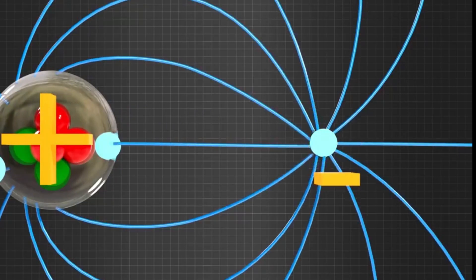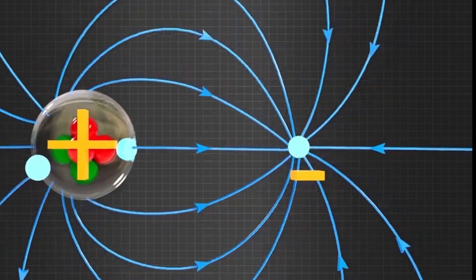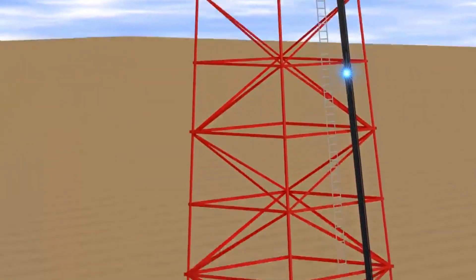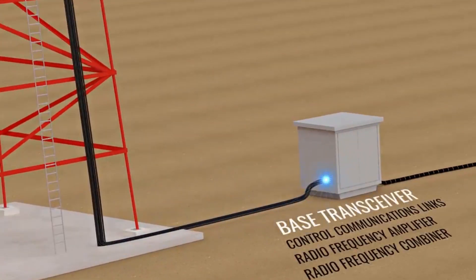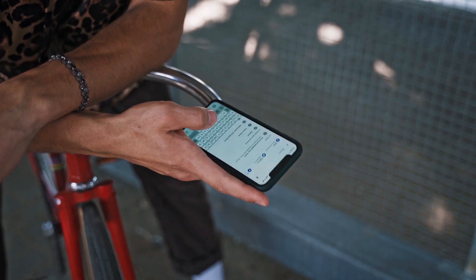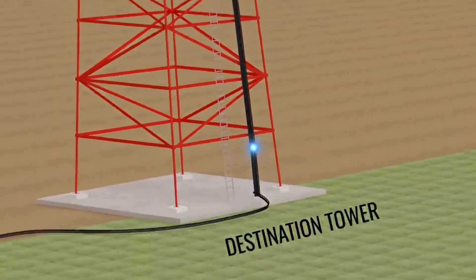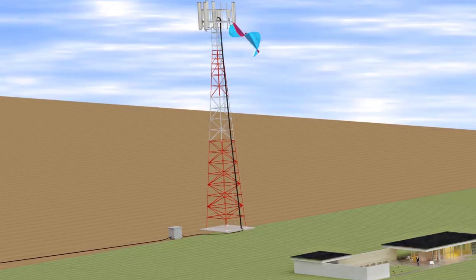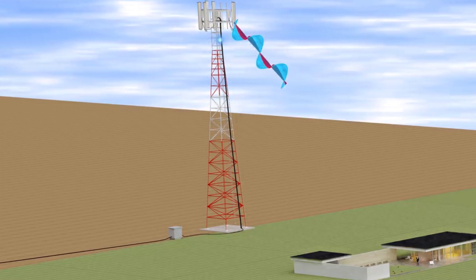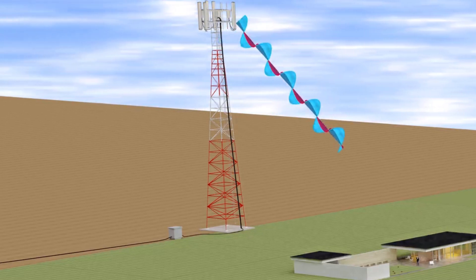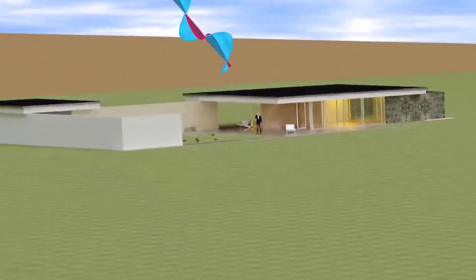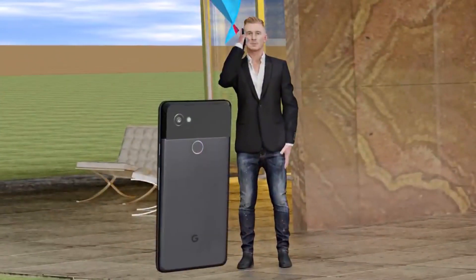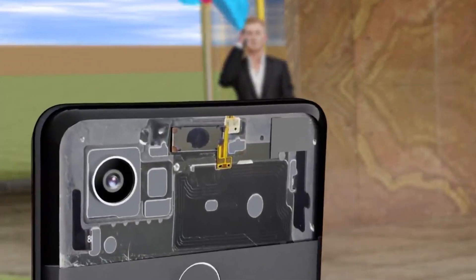The wireless router receives the fluctuations, turns them back into electric signals, and sends the information to the internet using a physical wire ethernet connection. The same happens with your friend — his Wi-Fi router receives the information through the ethernet connection, which then performs the electron dance, emitting the information of the message in the air. The antenna of your friend's phone feels the fluctuations and again turns them back into electric signals, which are then decoded for your friend to see.